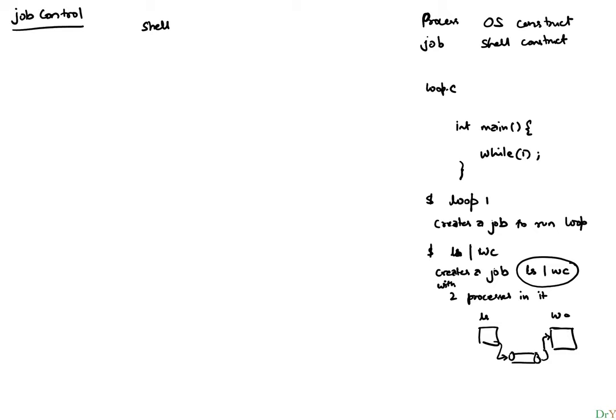It creates a pipe, and ls writes to this pipe and wc reads from that pipe — that's all set up by the operating system. In the shell, you can actually run a command called jobs. Jobs is a shell command or shell directive, as opposed to something like ls, which is actually an executable. There is no executable called jobs — jobs is an internal shell command.